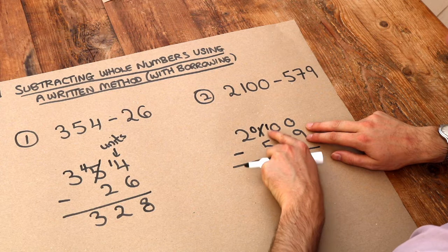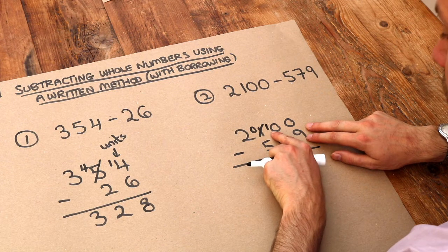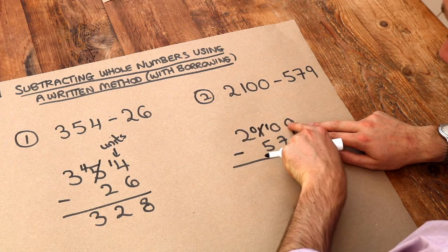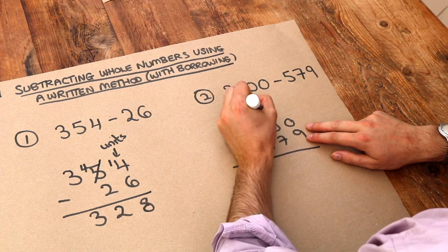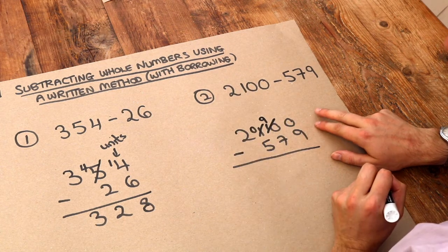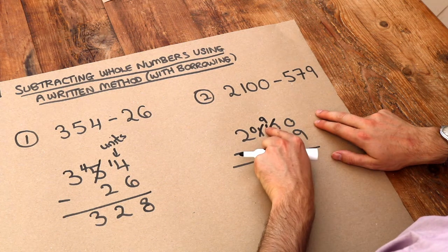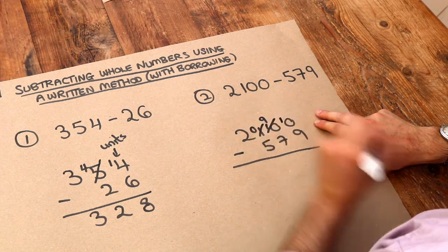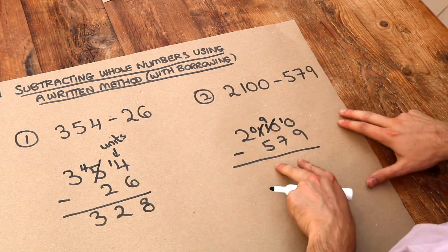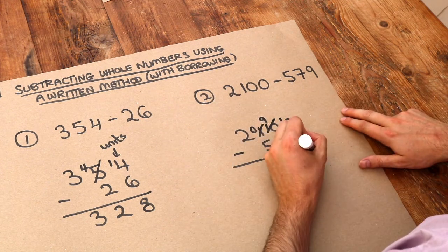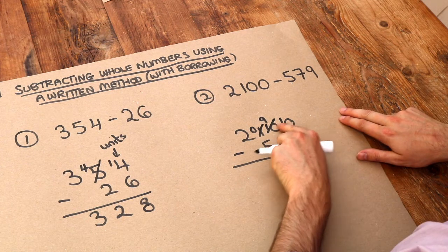Now because we got 10 here we can now borrow from this because we need to get a 1 here. So we borrow from this by crossing out the 10 and putting a 9, and because we borrowed 1 from this we can now put a 1 here. So we've now got 10 minus 9, we can do that. 10 minus 9 is 1.